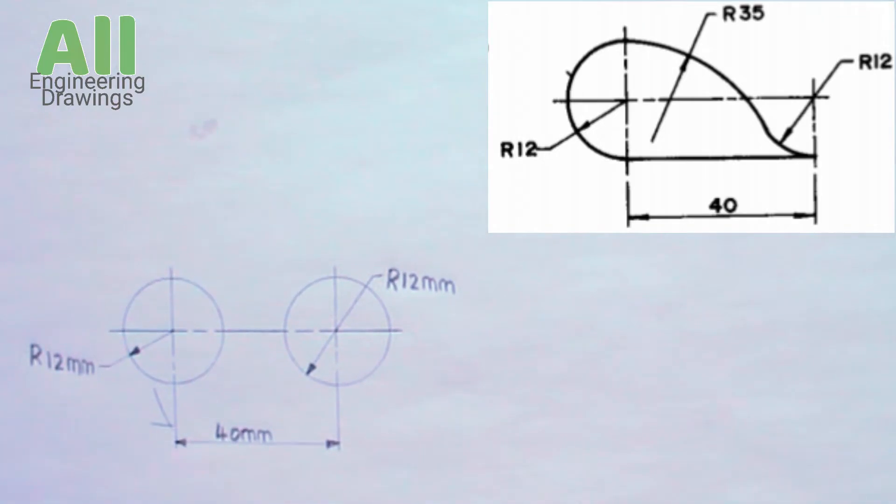Now place your compass at the point where the arcs intersect with a radius of 35 millimeters and produce the tangential arc.